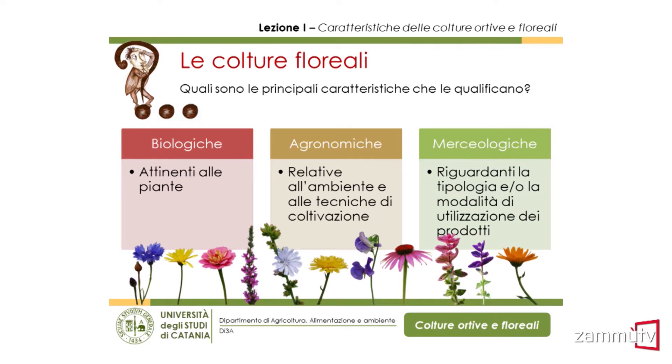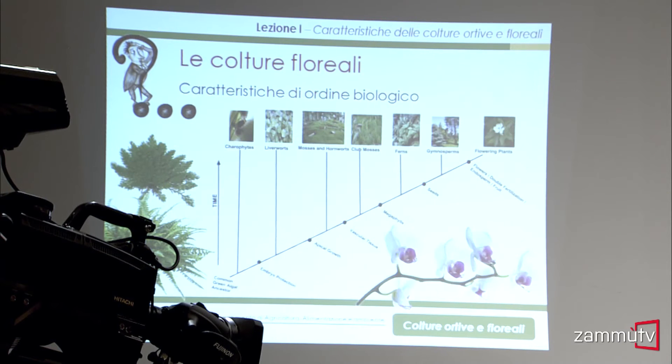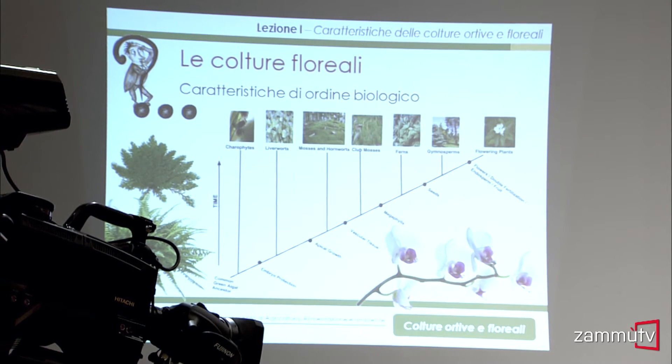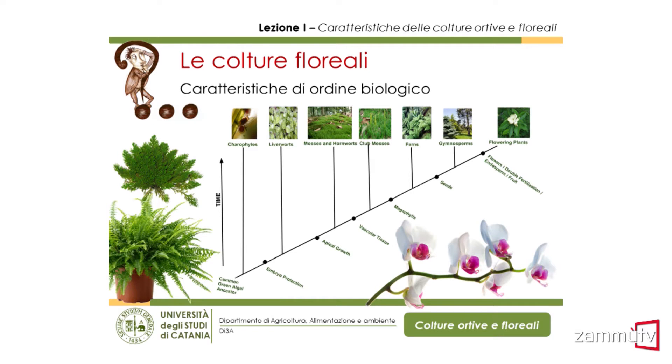Anche per le colture floreali esistono caratteristiche di ordine biologico, agronomico e merceologico. Dal punto di vista biologico la base è estremamente ampia: a scopo ornamentale vengono utilizzate piante a partire dai muschi fino alle piante superiori — le piante da fiore. Ci sono moltissime felci utilizzate a scopi ornamentali, e anche la selaginella, che appartiene a un gruppo antecedente nella scala evolutiva a quello delle felci.